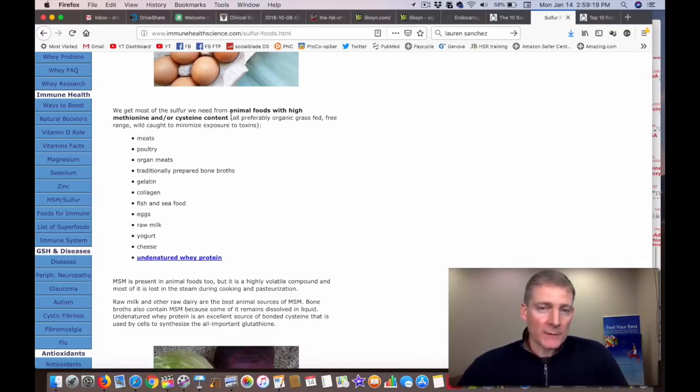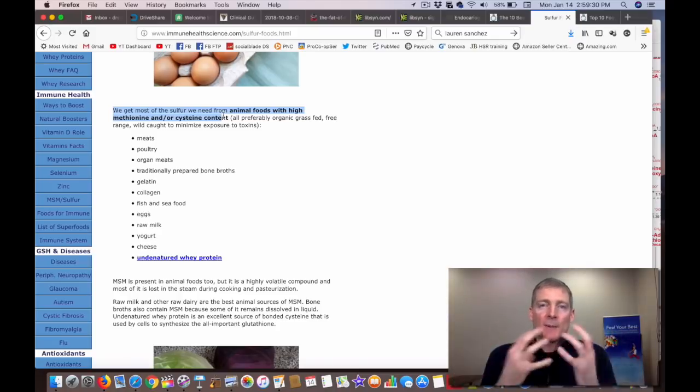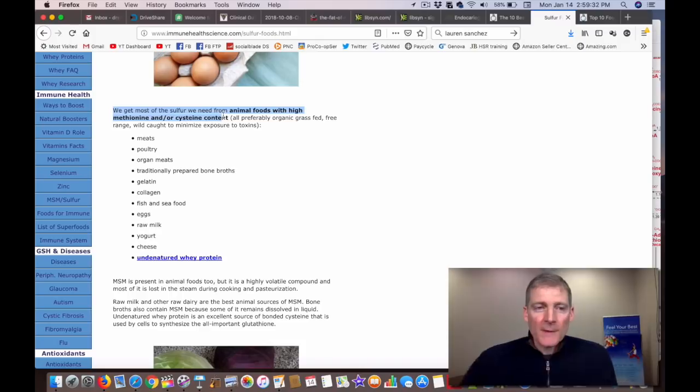Now the best source of sulfur. It says right here, we get most of the sulfur we need from animal foods with high methionine and or cysteine content. Methionine and cysteine are chemical compounds that contain sulfur. So we have meat, poultry, organ meats, bone broths, gelatin, collagen.